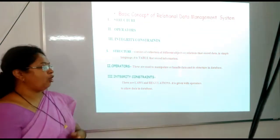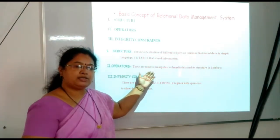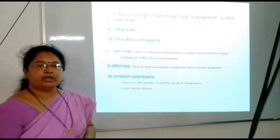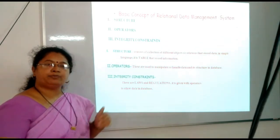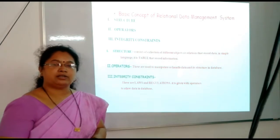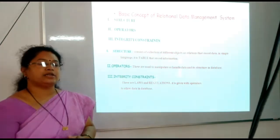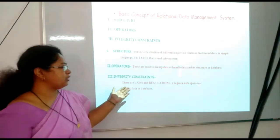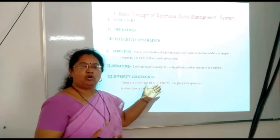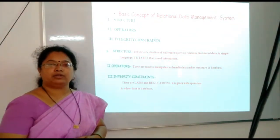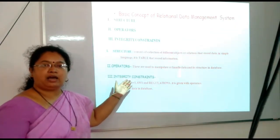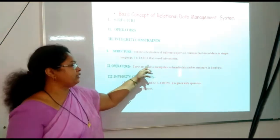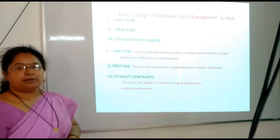The second concept is operator. Operators are nothing but signs and symbols. These signs and symbols are used to manipulate or to handle our data in a database. The third concept is integrity constraint. Constraint means rules. Integrity constraint also means rules, laws, or protocols. By using these rules or laws, we can store our data within the table. Integrity constraints are used with operators, and we can store our data in a specific structure — called a table — in a relational database management system.